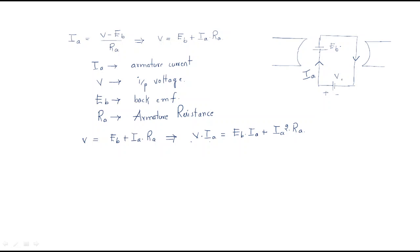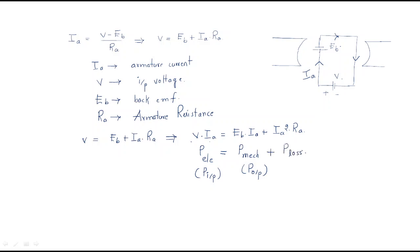Here V·Ia is the input power — V is input voltage and Ia is input current. Eb·Ia is the output power, also called mechanical power. Ia²·Ra, by its name, is the copper loss — this is the loss in the armature resistance.